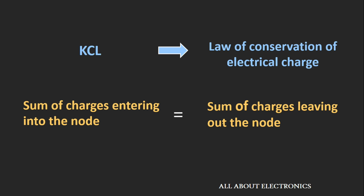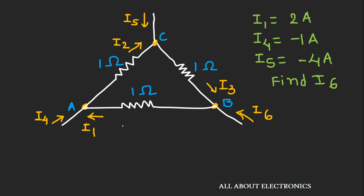Now let's take a numerical example to see the application of Kirchhoff's Current Law. Here we have a circuit with three nodes A, B, and C, and currents I1 to I6 flowing through the circuit. Some currents are given and we need to find the current I6 entering node B. To find I6, we need to apply KCL at node B.